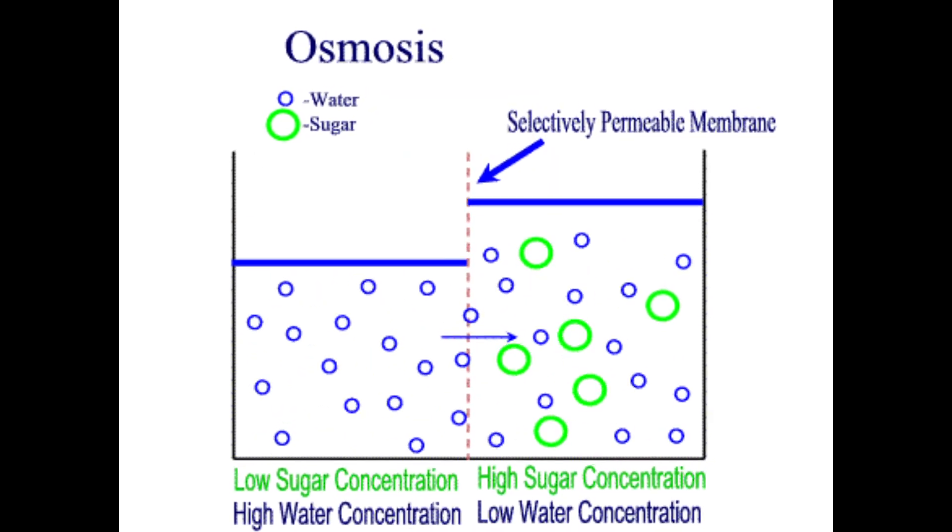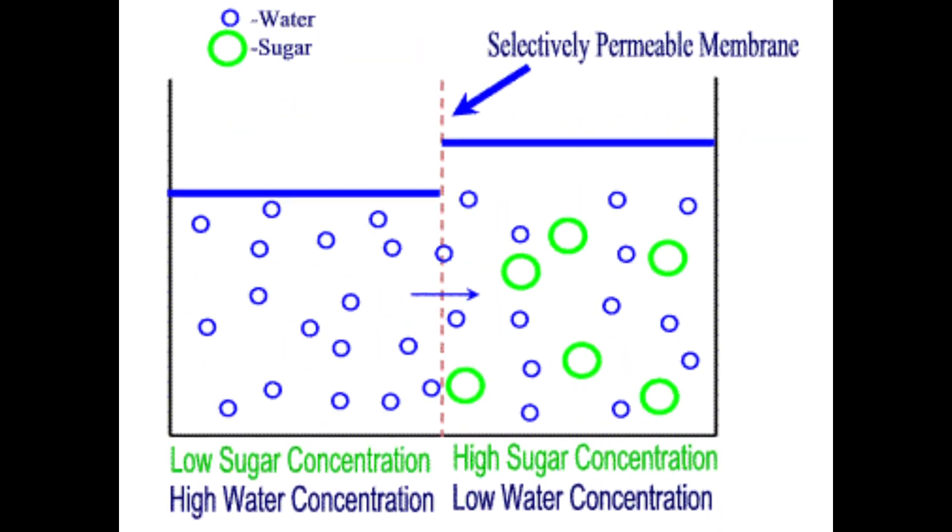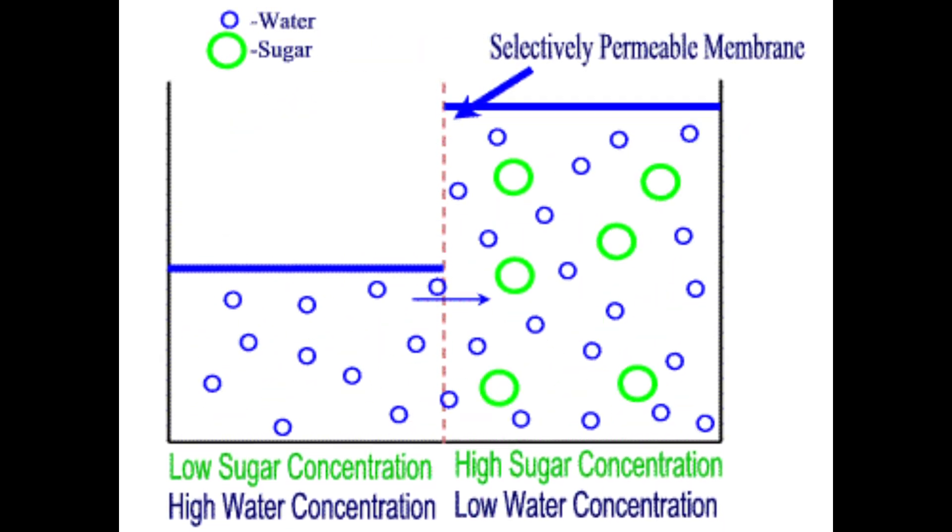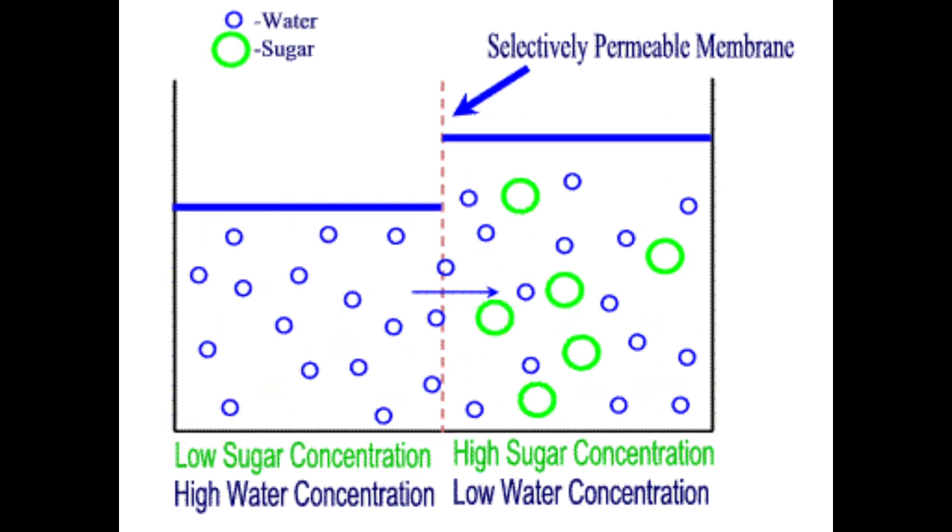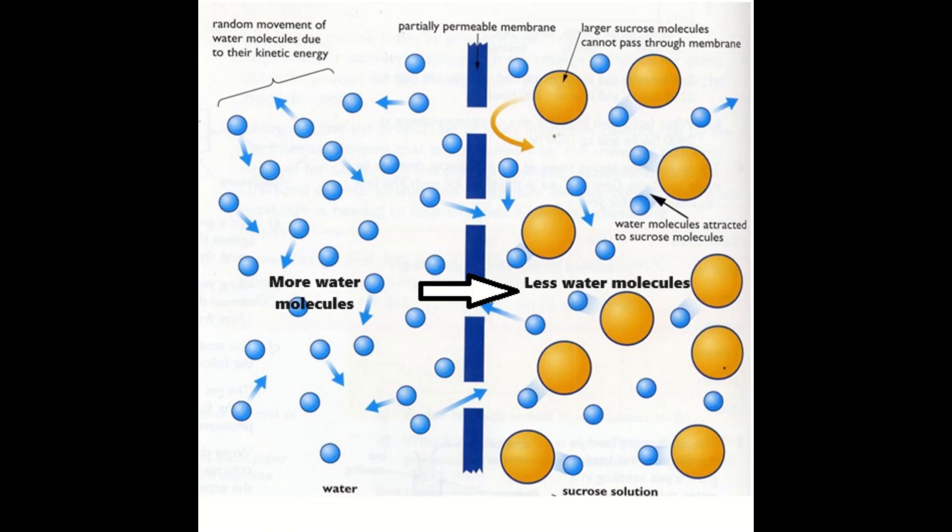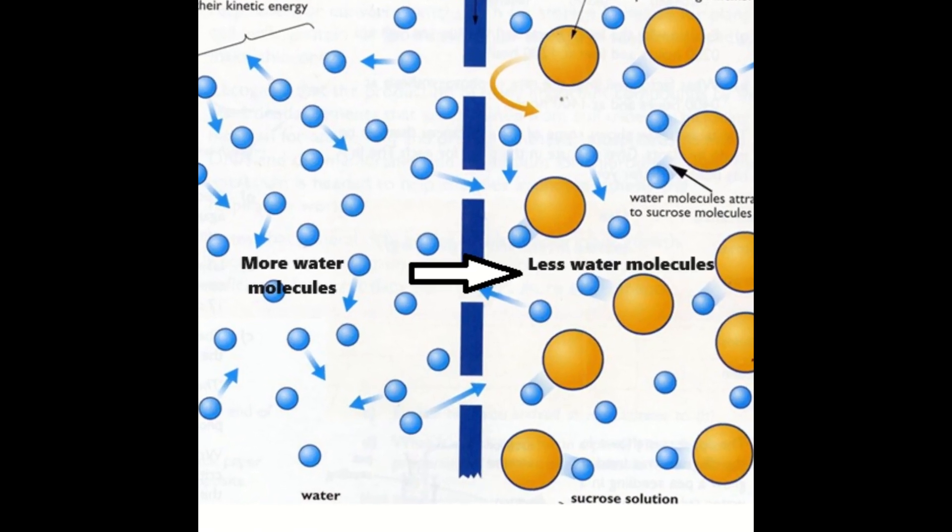Now osmosis is a special type of diffusion that focuses on the movement of water molecules from a dilute solution to a more concentrated solution across a selectively permeable membrane. So water always moves from where there's more water to where there's less water.